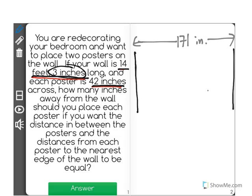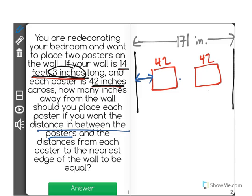Now let's draw the posters where they'll go. It says each poster is 42 inches across, and that they want the same amount of space in between the posters and from the posters to the edge of the wall. So the posters will go around here somewhere. We know that they each have a length of 42 inches. Now what's important to note is it said the distance in between the posters and the distances from each poster to the nearest edge of the wall to be equal.